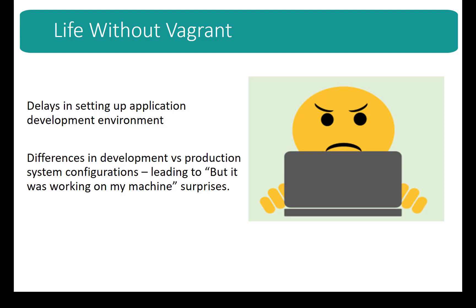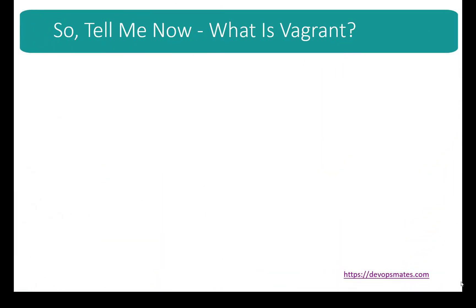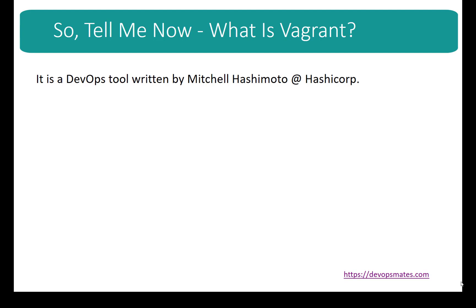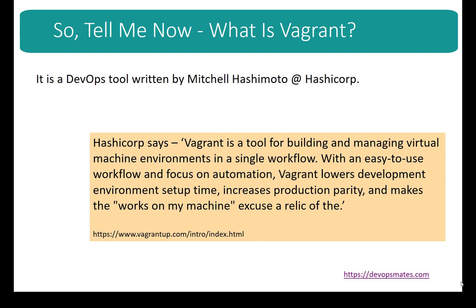These are the things which Vagrant can do for you. Vagrant is a DevOps tool written by Mitchell Hashimoto from HashiCorp. HashiCorp says Vagrant is a tool for building and managing virtual machine environments in a single workflow, with an easy-to-use workflow and focus on automation. Vagrant lowers development environment setup time, increases production parity, and eliminates the 'works on my machine' problem.